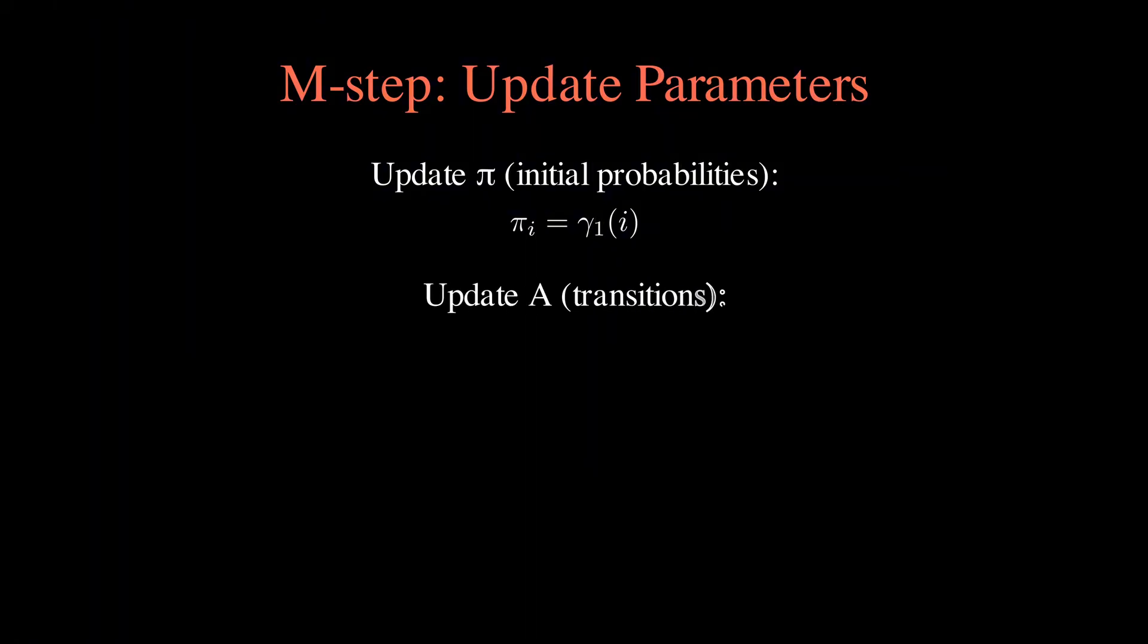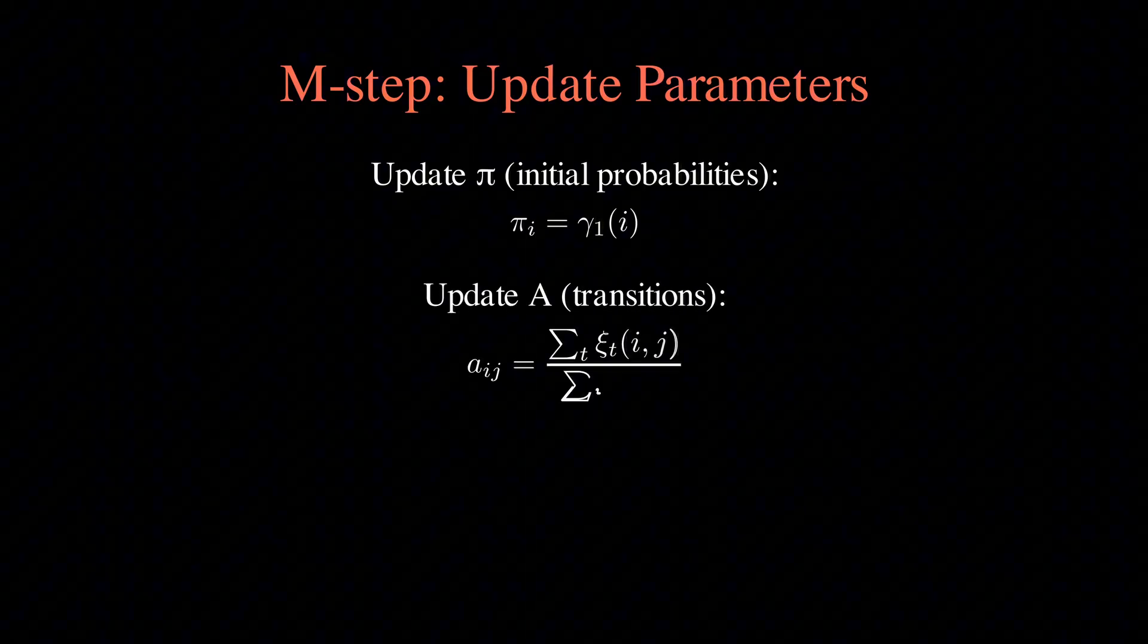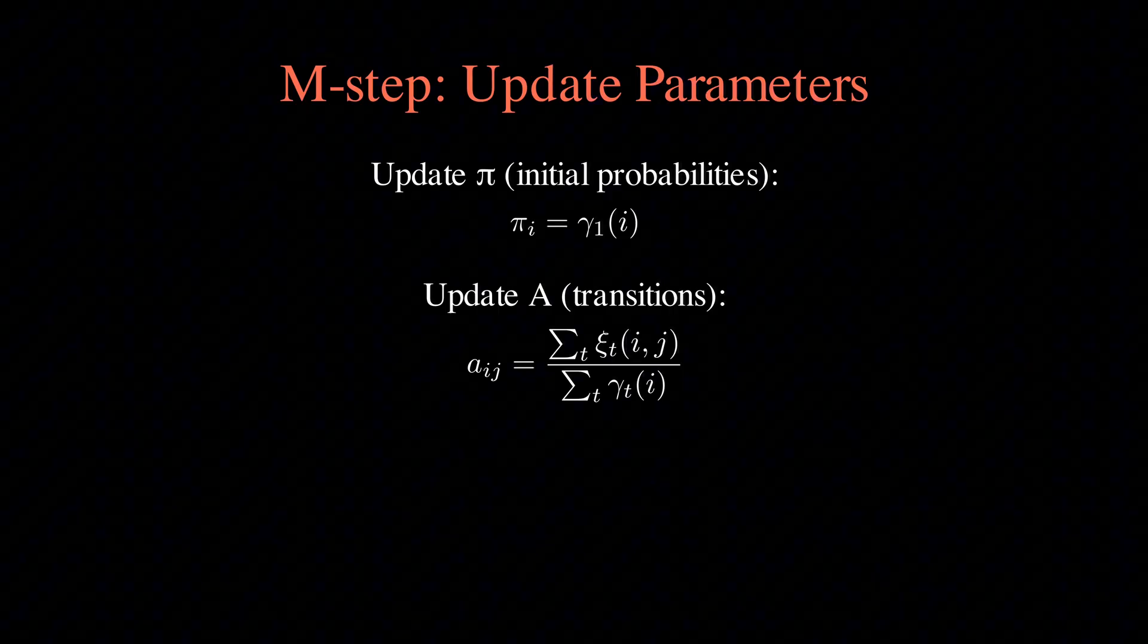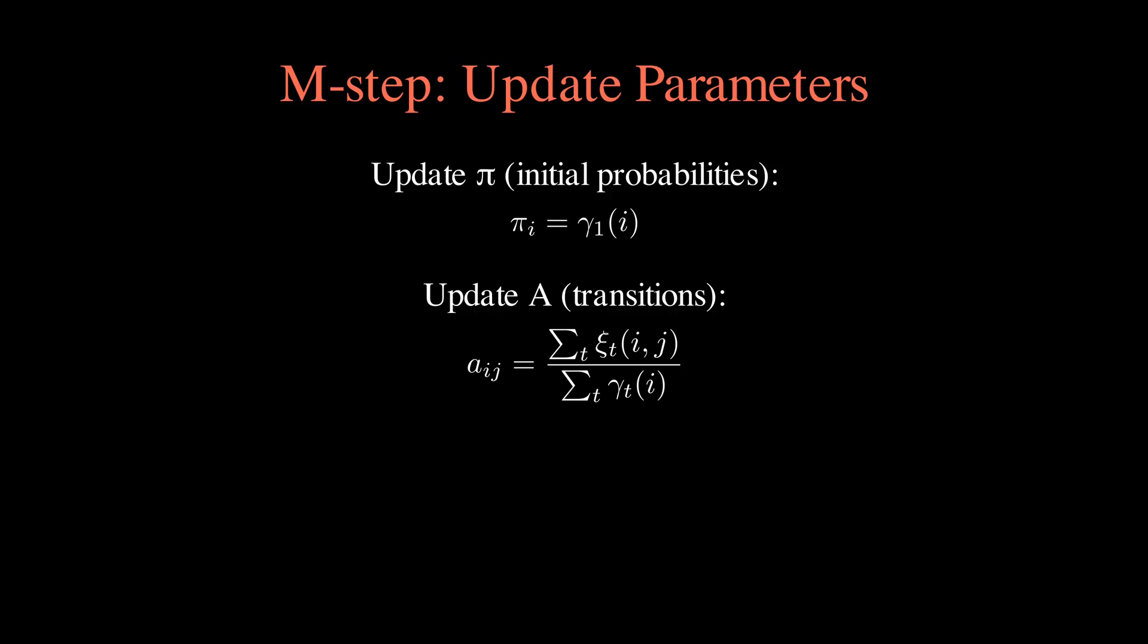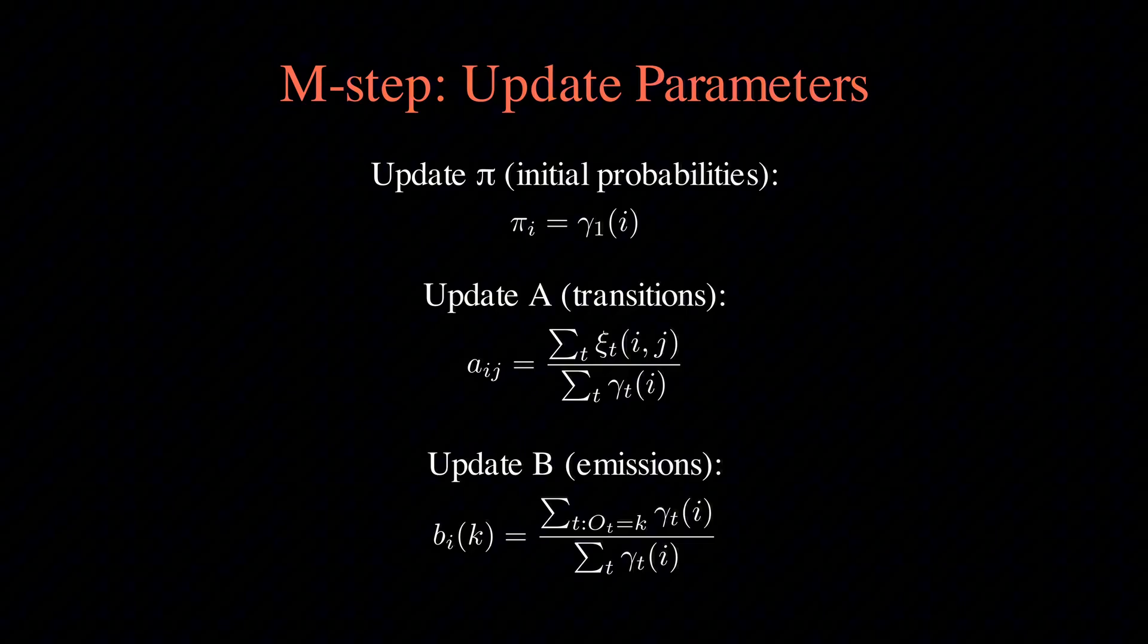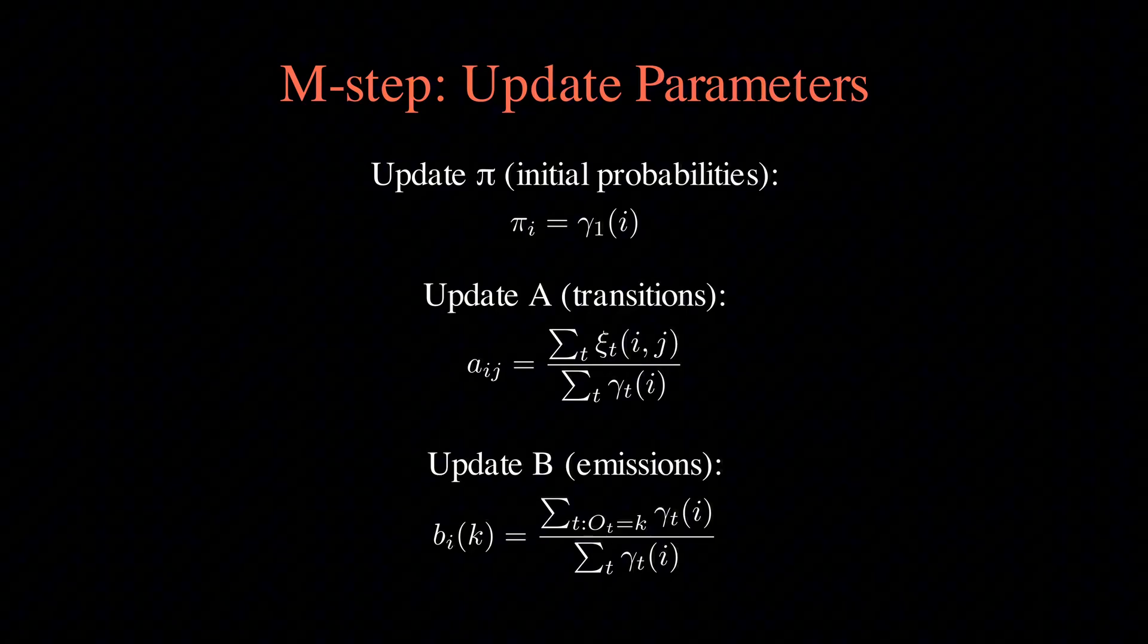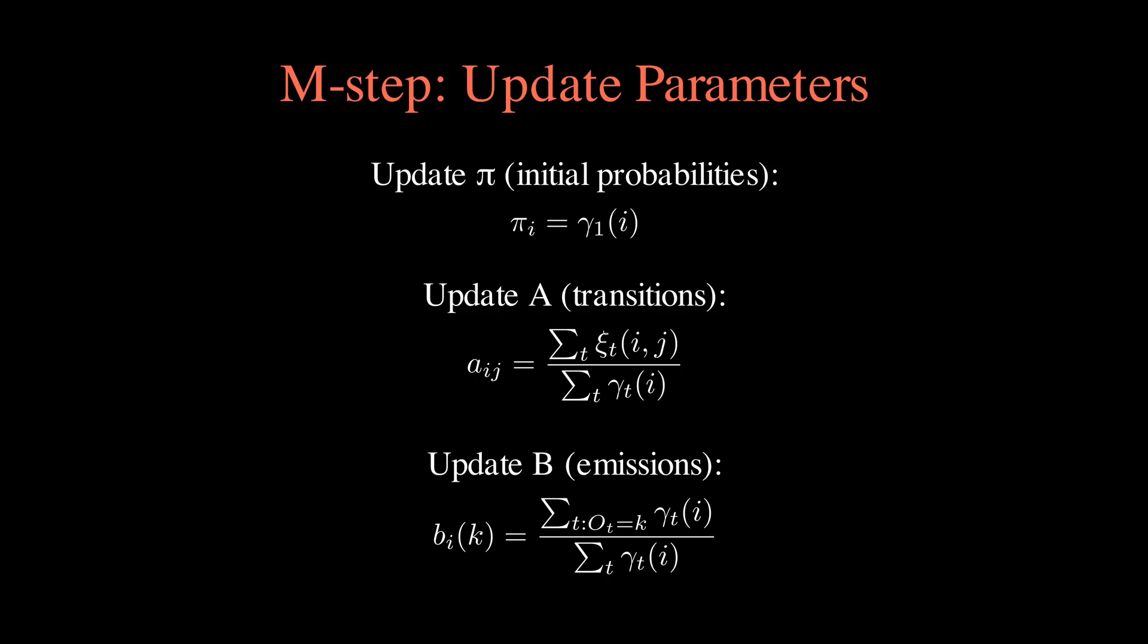For the transition probabilities from state i to state j, we take the sum of xi for all time steps and divide by the sum of gamma for state i across all time steps, which essentially counts how often we transitioned from i to j relative to how often we were in state i. For the emission probabilities, we sum up the gamma values at times when we observed a particular symbol and divide by the total gamma values for that state, which tells us how often that state generated that particular observation.